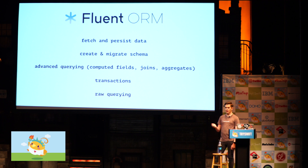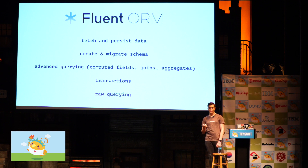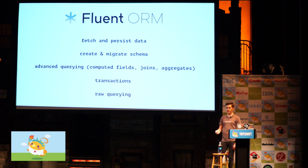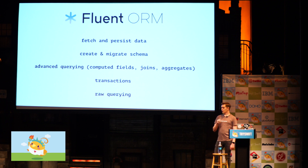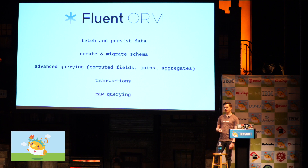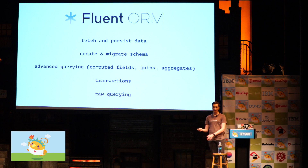Fluent is an ORM created by the core team. It lets you fetch and persist data, create and migrate schema — similar to what Core Data does for you. It supports querying and advanced querying like computed fields, joins, and aggregates with a nice Swift syntax. You can do transactions — saving multiple things where if one fails, you undo everything. Fluent supports both SQL and NoSQL alike: MySQL, MongoDB, Postgres. Sometimes you might want access to those underlying layers — like selecting the MySQL version you're using — and Fluent makes it easy to get out of your way and access that layer.